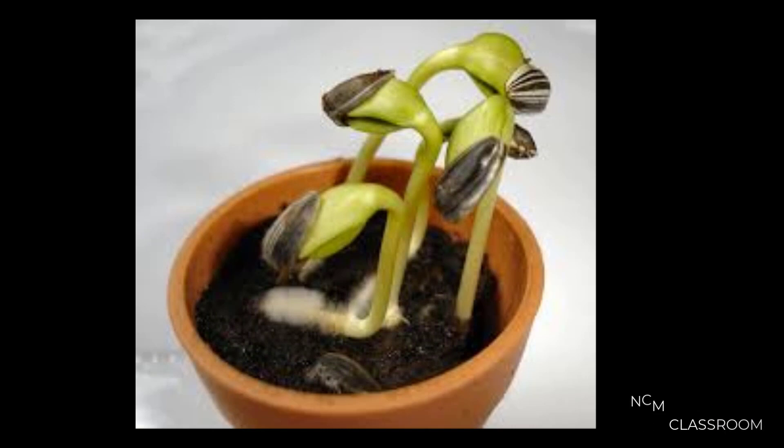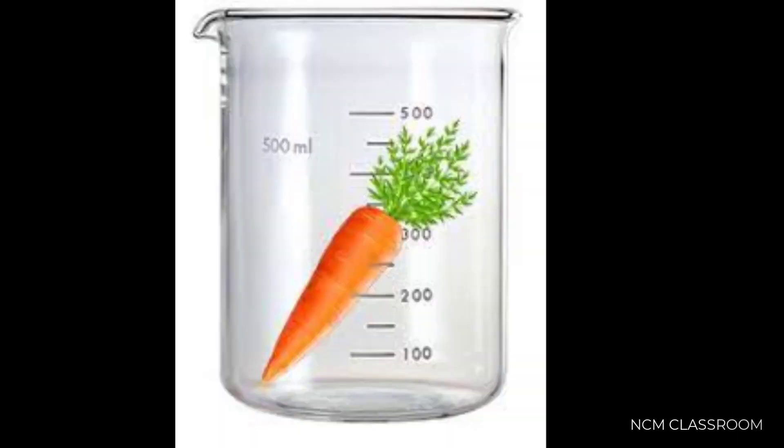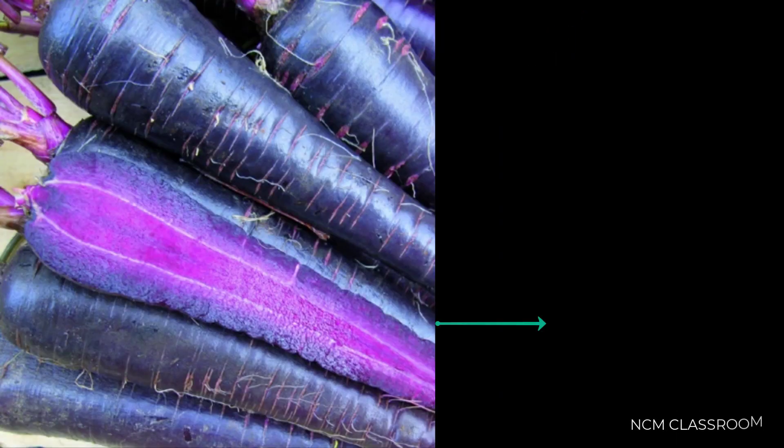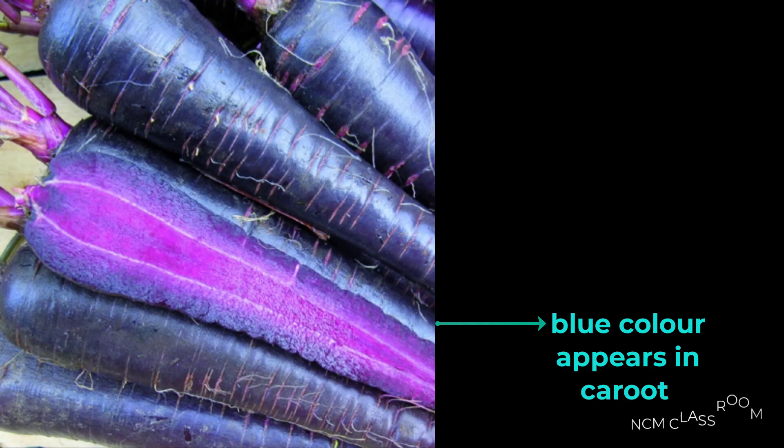Now let us see the water absorption by root. A carrot was taken into a beaker and pour some water, and now add few drops of blue ink into the water. Leave the carrot for two or three days, cut it into half. You can observe blue color inside the carrot - that means water moving upwards in the carrot.